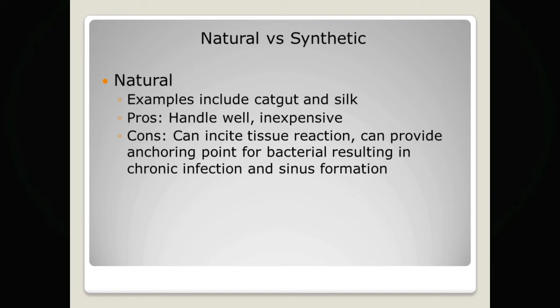Natural sutures are the oldest type of sutures. Examples include catgut and silk — catgut is rarely used anymore and silk is less common than it used to be, but it is still used. The pros are that they generally handle quite well and tend to be inexpensive. However, because of the natural material, they can incite tissue reaction and cause scarring, and their biological makeup can provide an anchoring point for bacteria, leading to chronic infection and sinus formation.